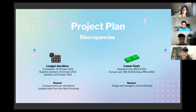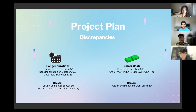The reason for the one-day delay was that there were some over-allocations, but we managed to resolve them. We also updated tasks from the client, which included the invoices list. The second discrepancy is lower cost — our baseline cost was RM23,050 and our actual cost is RM20,600, meaning we are under budget and saved approximately RM2,450, because we assigned resources efficiently within the team.